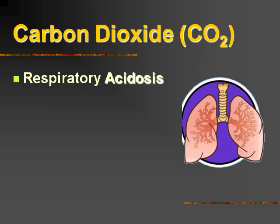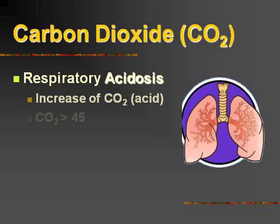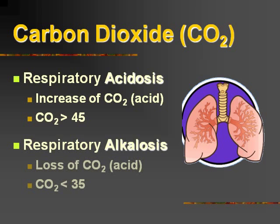For CO2, let's talk about respiratory acidosis. If we have an increase in our CO2, or the circulating acid in the blood, the CO2 on the blood gas is going to be greater than 45. For respiratory alkalosis, the pH is bumped up and we're going to have a loss of acid, so the CO2 will be less than 35.